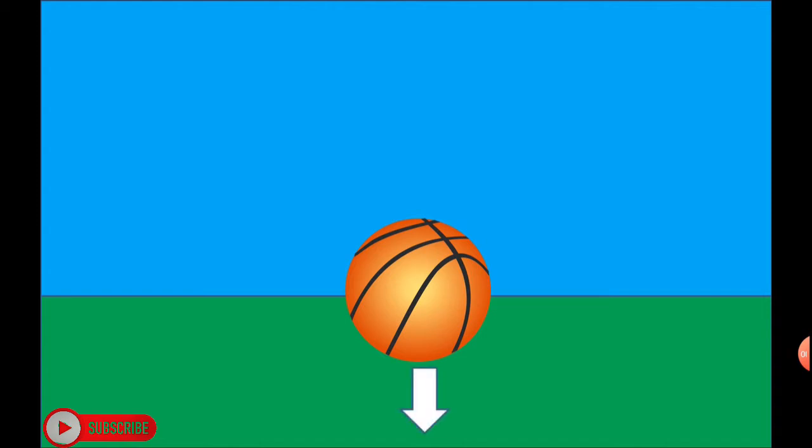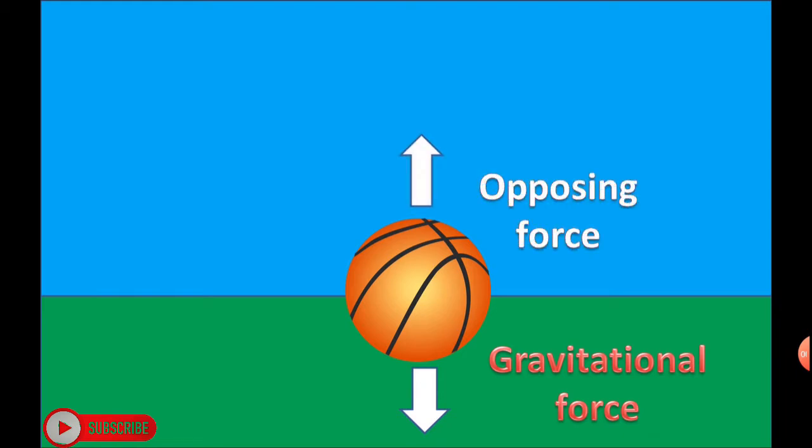One of the forces is directed towards the earth called gravitational force. Another is in the opposite direction called opposing or normal force. Net force is equal to zero. Both forces are in opposite directions, hence the object remains at rest.